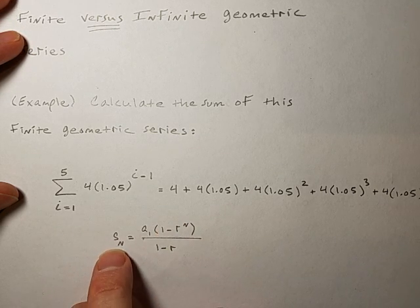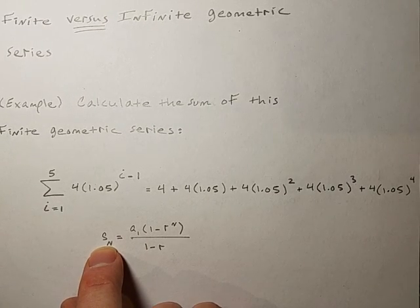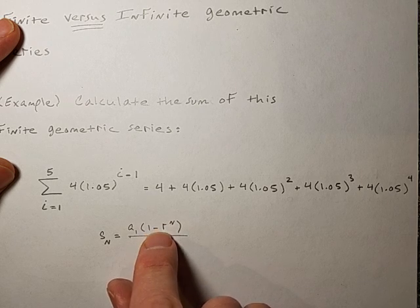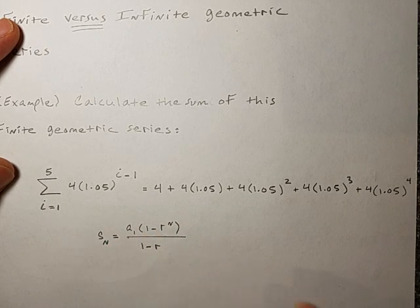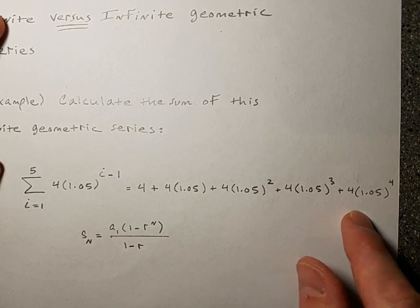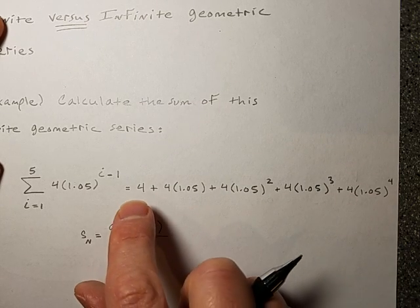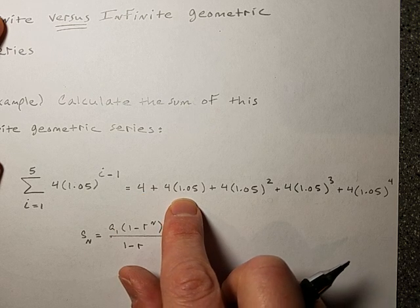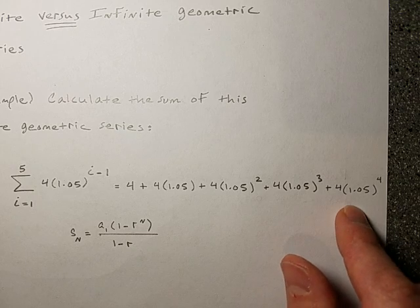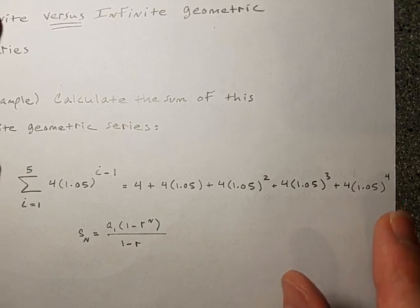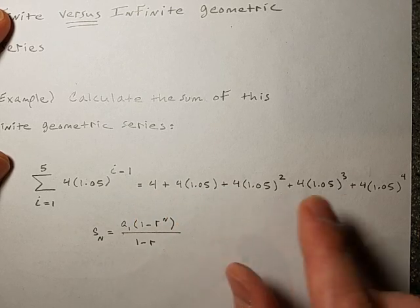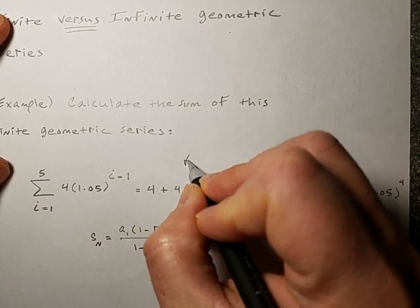If you want the sum of the first n terms, you put that number in for n, put r here and here, and a₁, the first term, there. Now, is this geometric? Yes. If you take any term and multiply it by 1.05, you get the next term and the next term and the next. That's what a geometric series is — any term times r gives you the next term and the next. So this is geometric.